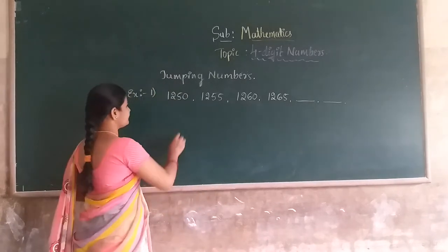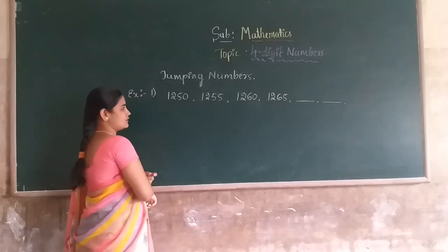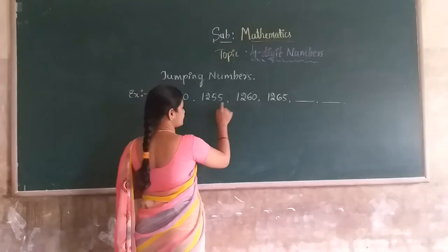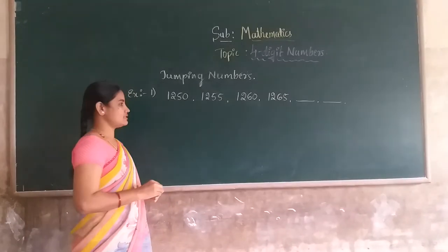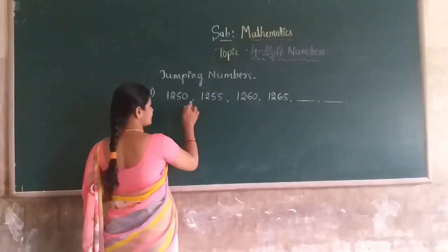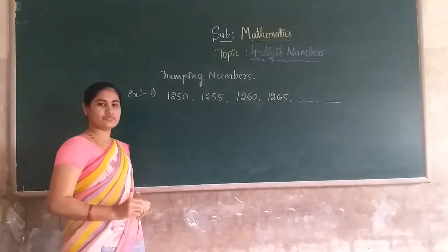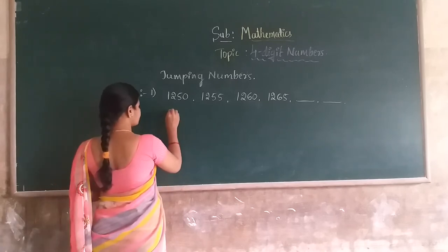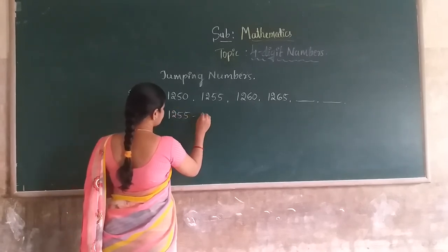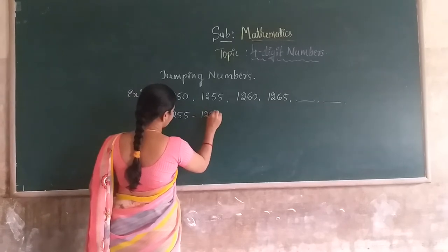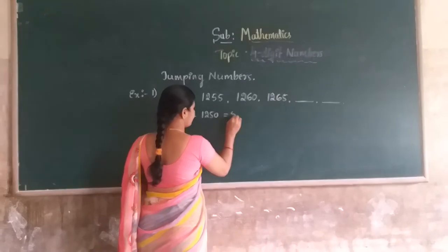Dear students, find the common difference between these two numbers. Both pairs having the same common difference. First, subtract 1255 minus 1250. The common difference between these two is 5.